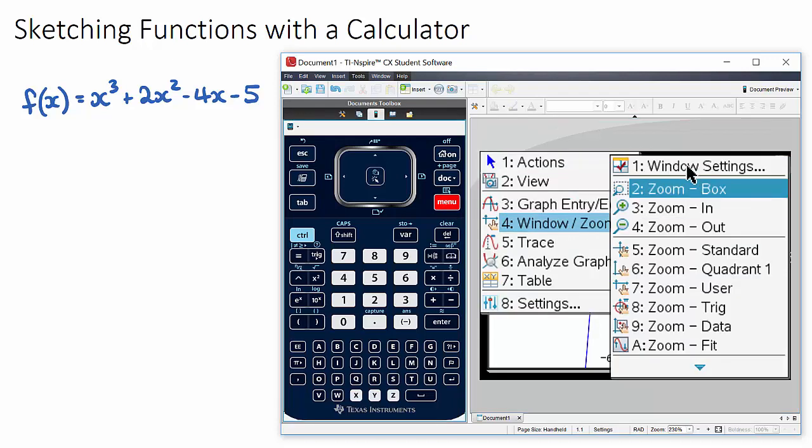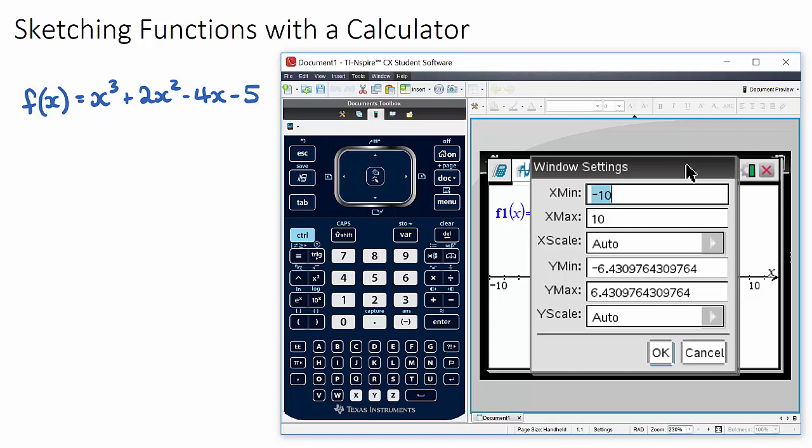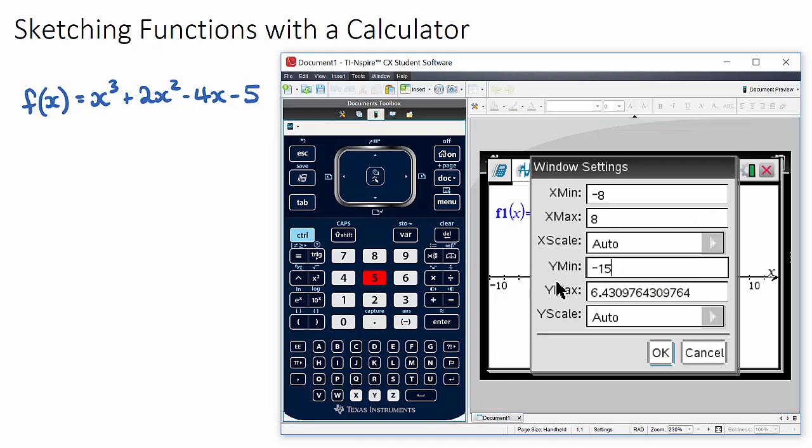Window and zoom - I'm going to change my window settings. It looked pretty fine in the x, maybe I could go in a little bit. I'm going to change my x min to negative 8, my x max to 8, but I'm going to make this a little bit lower, so let's go negative 15 and positive 10 for now.